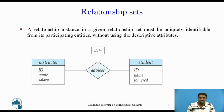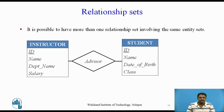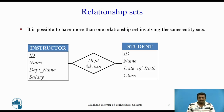A relationship instance in a given relationship set must be uniquely identifiable from its participating entities without using the descriptive attributes. For example, suppose we want to model all the dates when an instructor became an advisor of a particular student. The single-valued attribute date can store only a single date, so we cannot represent multiple dates by multiple relationship instances between the same instructor and student since the instances would not be uniquely identifiable. It is also possible to have more than one relationship set involving the same entity sets — for instance, instructor and student may participate in both an advisor and a department advisor relationship set.